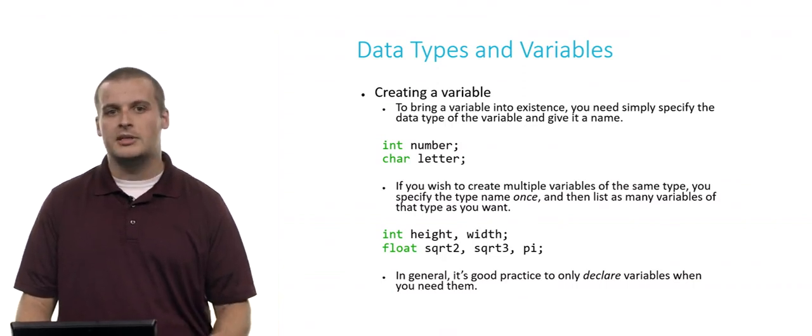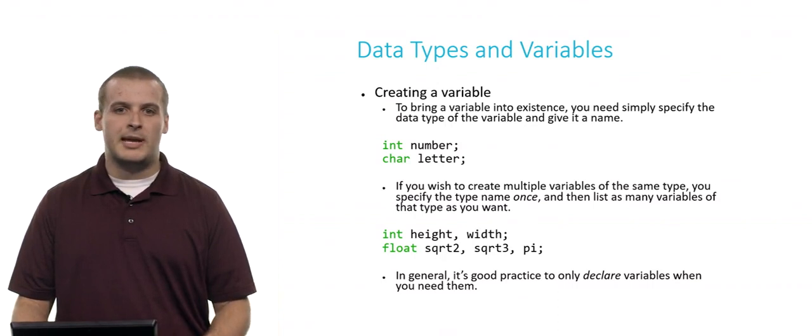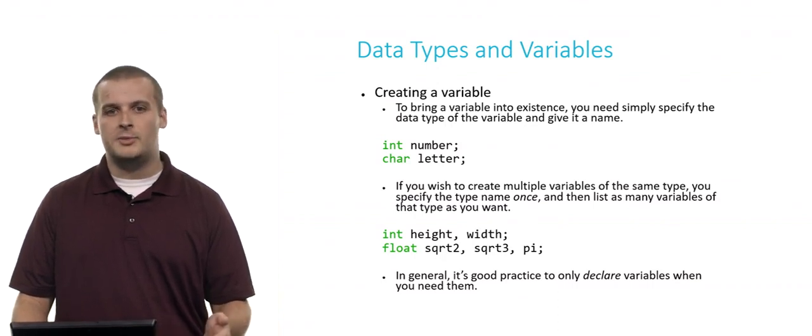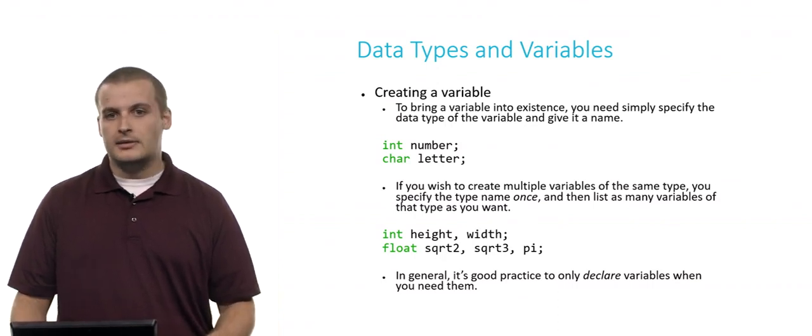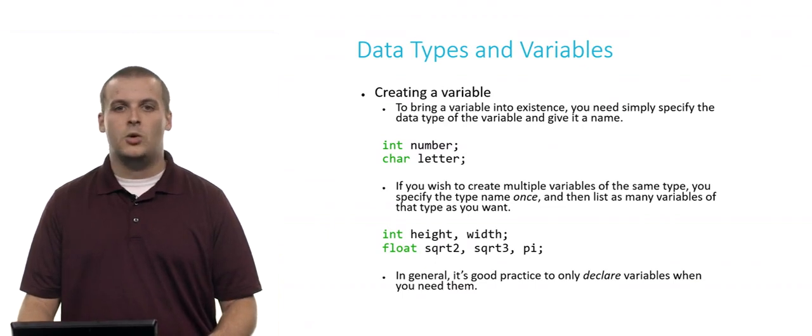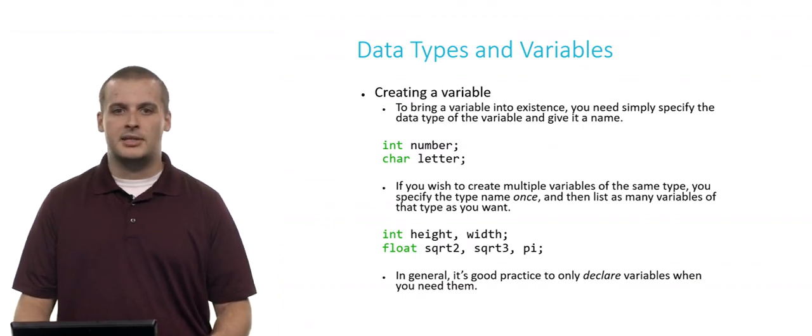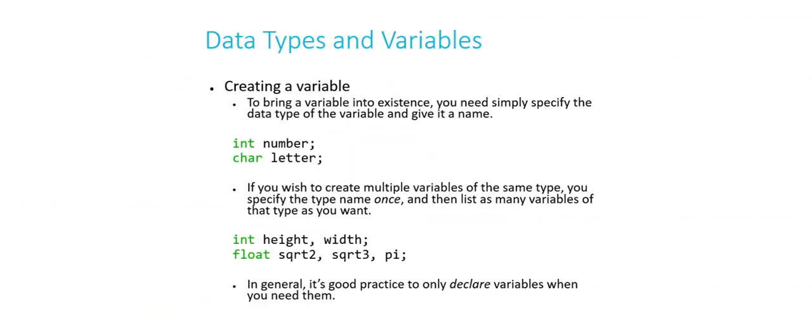The first, the variable's name is number, and number is capable of holding integer type values because its type is int. Letter is another variable that can hold characters because its data type is char. Pretty straightforward, right? If you find yourself in a situation where you need to create multiple variables of the same type, you only need to specify the type name once. Then just list as many variables of that type as you need. So I could, for example, here in this third line of code, say int height semicolon, new line, int width semicolon, and that would work too. I'd still get two variables called height and width, each of which is an integer.